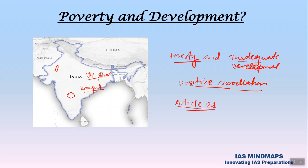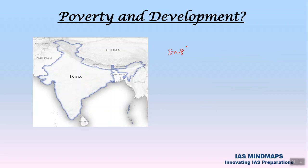Poverty is a very evolving concept, as is development. The Government of India and international organizations like the United Nations are taking various initiatives. Recently, they have passed the Sustainable Development Goals, one of which is to eradicate poverty from the global map. Poverty is not only a problem in India but a problem of humanity across the overall globe.